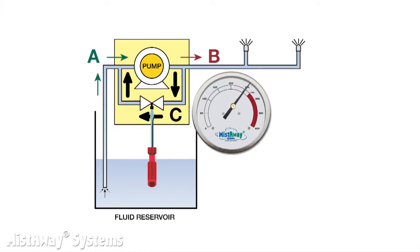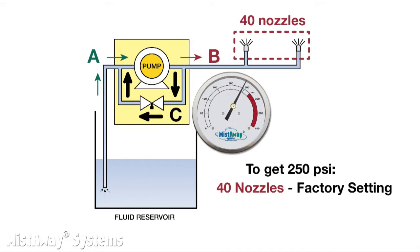When you turn the screw the other way, the pump produces less pressure. Our units have pressure gauges, like this one, installed on them so you can adjust the pressure to reflect the nozzle circuit you've set up.